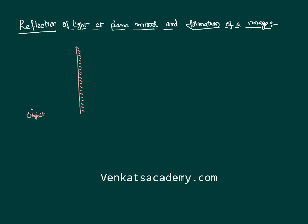Let us imagine a light ray striking the object and then further striking the plane mirror. This light ray is called, as we have explained, the incident light ray, and this point is called the point of incidence.